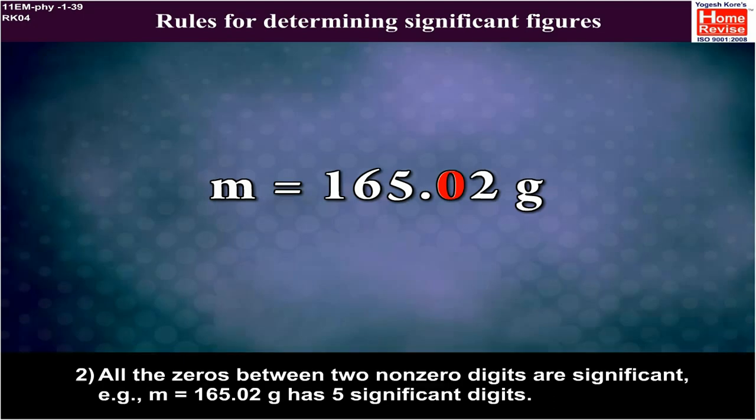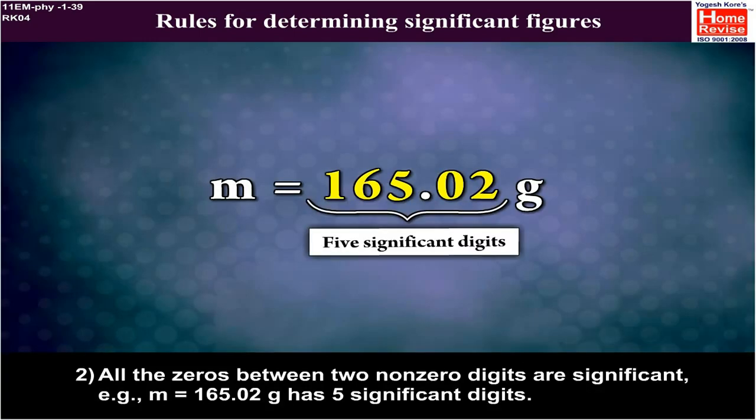2. All the zeros between two non-zero digits are significant. Example, m = 165.02 gram has five significant digits.